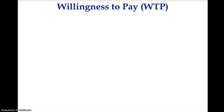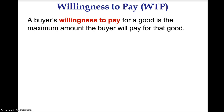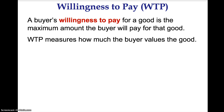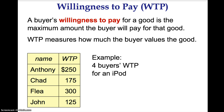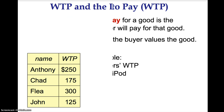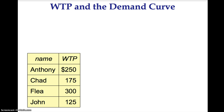Willingness to pay, or WTP for short, is the maximum amount a buyer is willing to pay for a good. Willingness to pay measures how much the buyer values a good. Here is an example of four buyers' willingness to pay for an iPod: Anthony is willing to pay $250, Chad is willing to pay $175, Flea is willing to pay $300, and John is willing to pay $125. We can use willingness to pay to analyze demand.